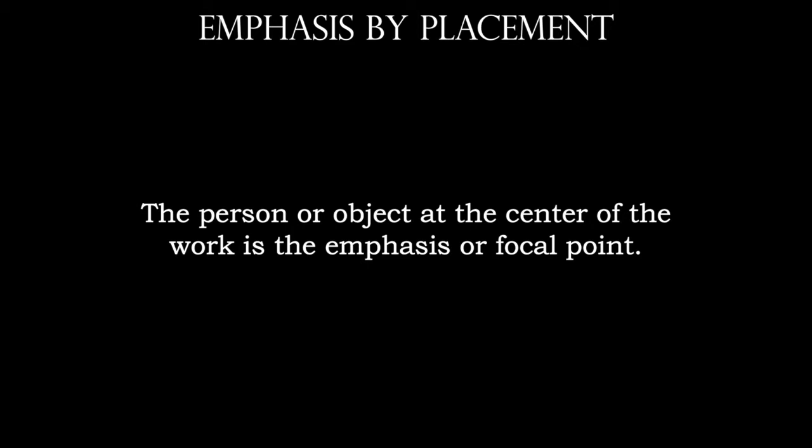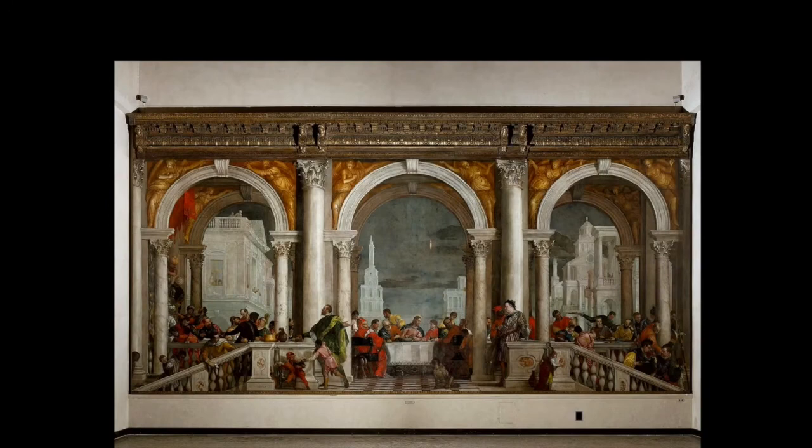Emphasis by placement is probably the easiest one to identify, because it's very natural for us to immediately look toward the center of the work. So with emphasis by placement, the person or object at the center of the work is going to be the focal point. In our painting here, we can see Christ in the center of the table, and so he's going to be the focal point of the work.